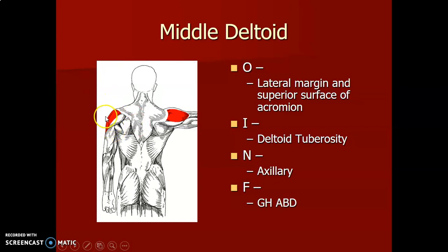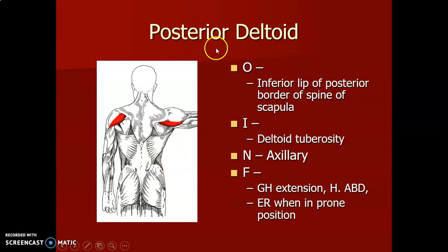The posterior fibers of deltoid come from the inferior lip of the posterior border of the spine of the scapula and insert on the deltoid tuberosity. Also innervated by the axillary nerve, they cause glenohumeral joint extension, causing the arm to move posteriorly, as well as abduction and external rotation of the glenohumeral joint.